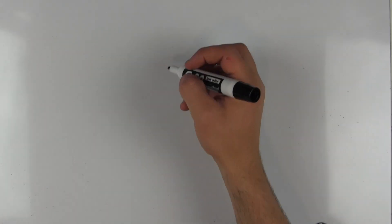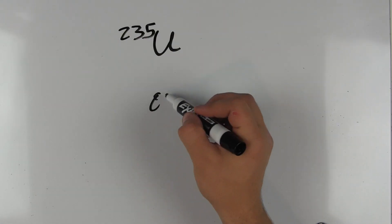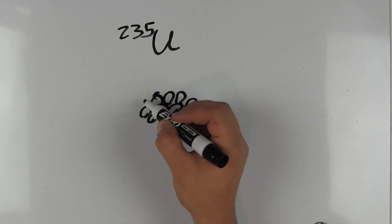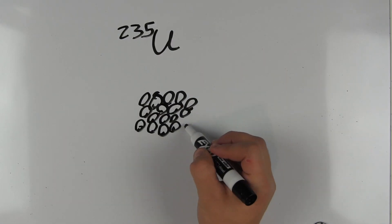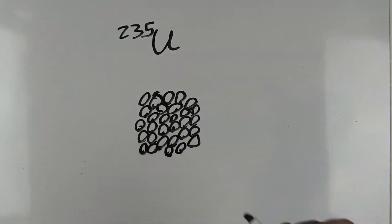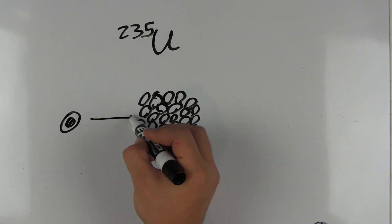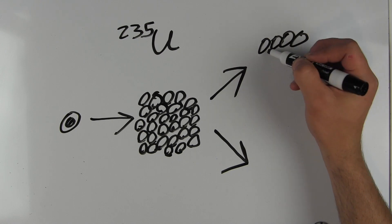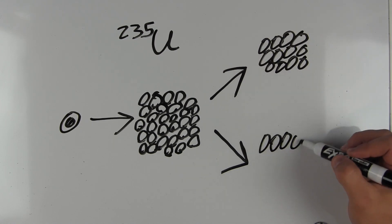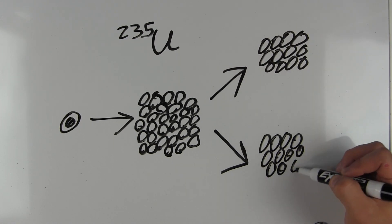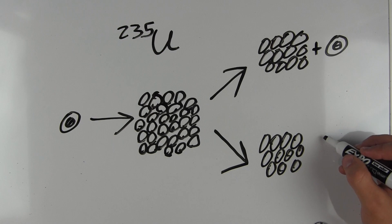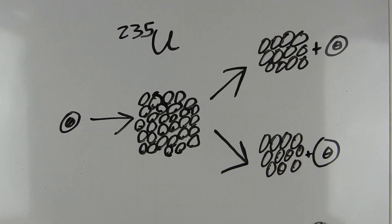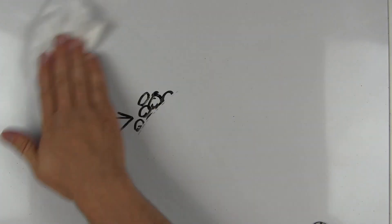The explosion produced by a nuclear bomb is released due to a process known as fission. Fission is the splitting of a nucleus into two parts, and inside a nuclear bomb it is applied because a uranium-235 atom is hit with a neutron and splits the uranium atom into two lighter elements. When one uranium atom is split into two, it releases a considerable amount of energy.